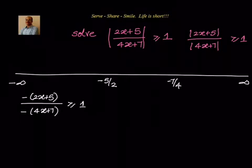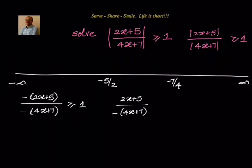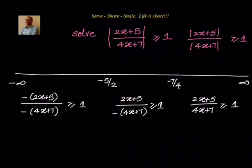For the interval -5/2 to -7/4, crossing -5/2 means the numerator becomes positive. Testing x = -2 in the denominator: 4(-2) + 7 = -1, which is negative. So we have (2x+5) divided by minus(4x+7), which must be ≥ 1. For the third interval, x > -7/4, both numerator and denominator are positive, so it becomes (2x+5)/(4x+7) ≥ 1.